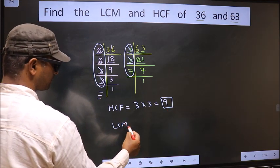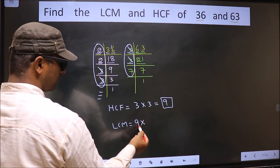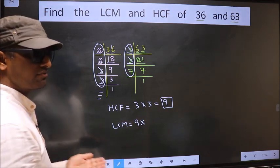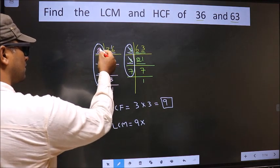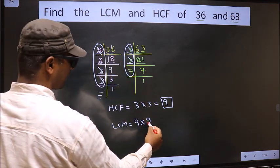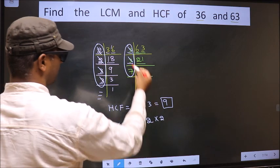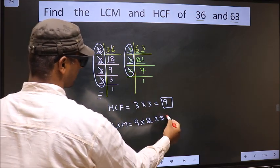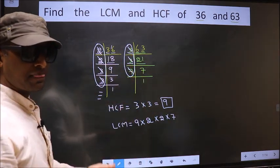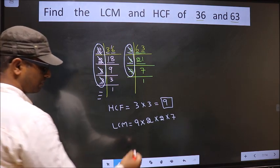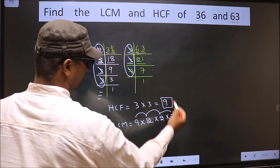Now LCM is whatever number you got as HCF. To that we should multiply by the numbers which we did not cut. Here the number 2 is not cut, so we include 2. Now this other 2 we include as well. Now here 7 is also included. Now each number has been cut. So our LCM is 9 into 2 is 18, 18 into 2 is 36, 36 into 7.